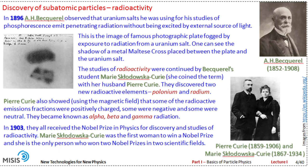The Curies also showed by clever use of magnetic fields that some of the products emitted by radioactive elements are charged positively, some negatively, and some are electrically neutral. These later became known as alpha, beta, and gamma radiation. We will discuss what this means in modern terms — in terms of Standard Model particles. Of course, at the time of their experiments they didn't know the nature of this radiation. In 1903, all three received the Nobel Prize. Marie Skłodowska-Curie holds the record of being not only the first woman to receive the Nobel Prize, but the only person to win two Nobel Prizes in two different scientific fields: chemistry and physics.